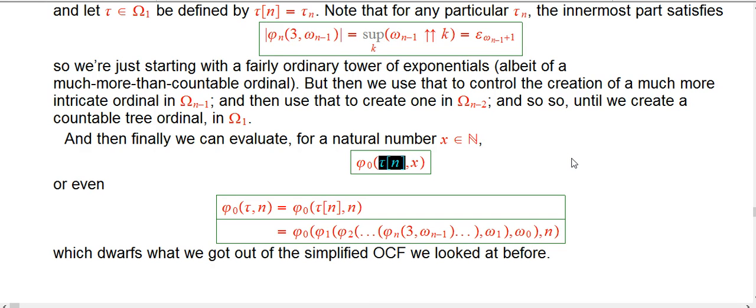For any one of those τ's, whatever level of complexity we'd like to stop at, that's a countable ordinal. We can plug that into the φ_0 function, which is just our name for the fast-growing hierarchy with some natural number argument x. Why not diagonalize one more time?